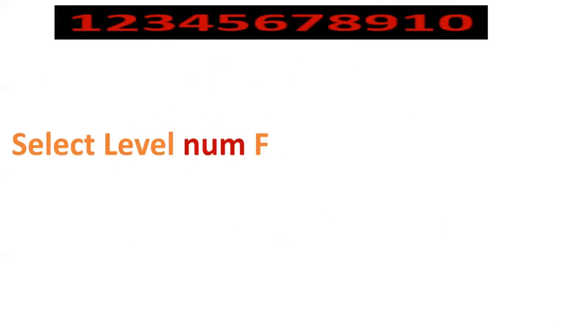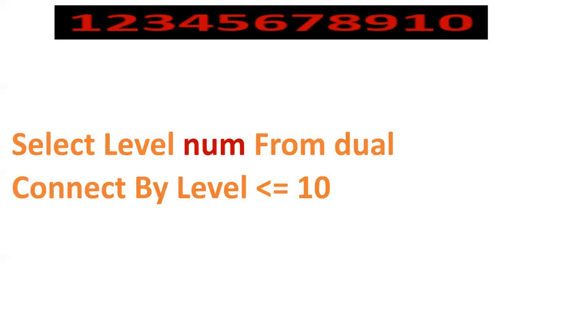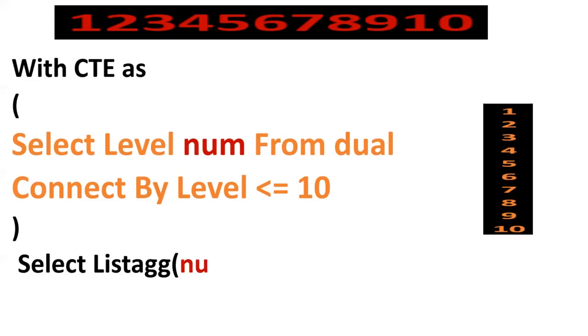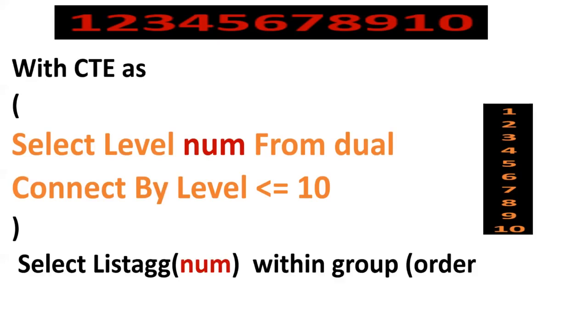Next one is to print 1 to 10 numbers in horizontal manner. First, we need to print 1 to 10 in vertical manner, which can be achieved using CONNECT BY LEVEL, giving output 1 to 10. Then by using LISTAGG, we can convert it to horizontal manner — LISTAGG(num) over the result.